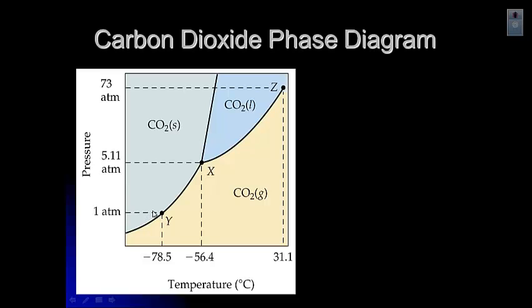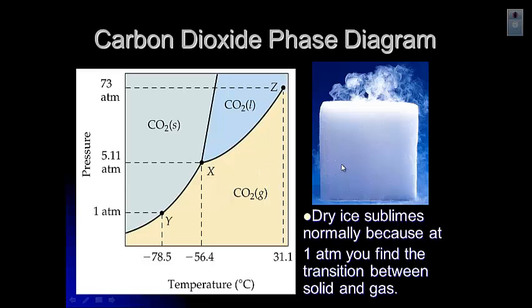carbon dioxide goes from a solid to a gas directly, so it goes through that sublimation process. And if you've ever seen carbon dioxide, dry ice, it sublimates. So you can see that gas coming off of that block of CO2, it just looks like a hunk of ice. But you find that transition between the solid and the gas. And so that is what causes that to sublime.